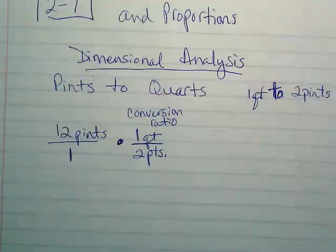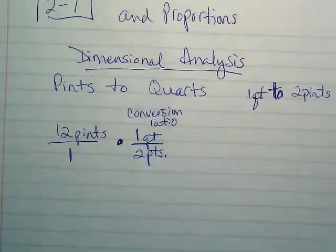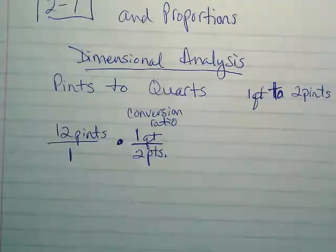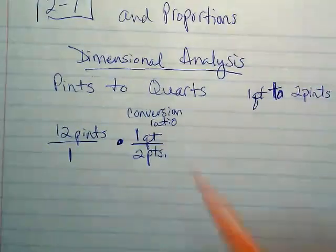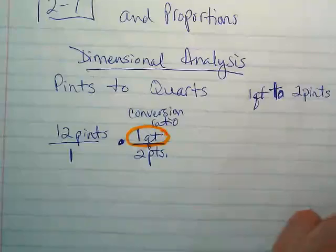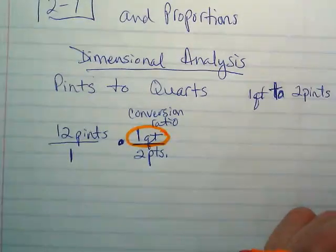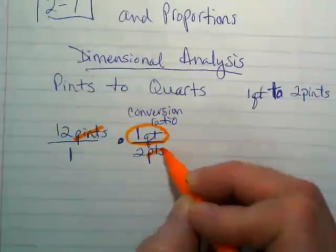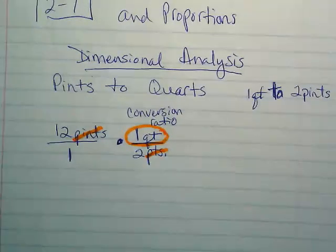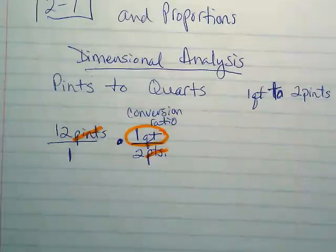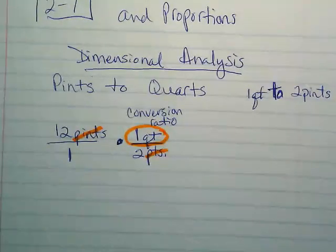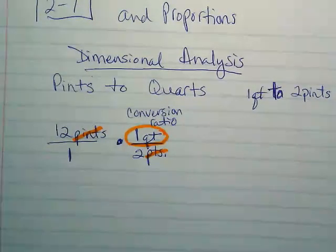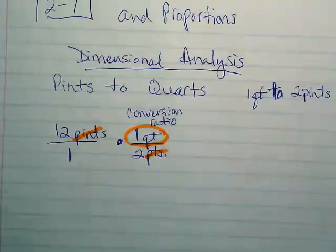Because I'm converting from pints to quarts, I want to get rid of the word pints, and I want to be left with just quarts. This is the label that I want. I can cross off labels in converting once I have one in the numerator and one in the denominator. That'll make it really important as we're setting up problems, because you have to pay attention to where does it start to know where to put its conversion.